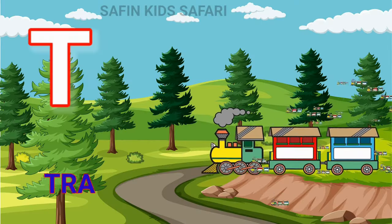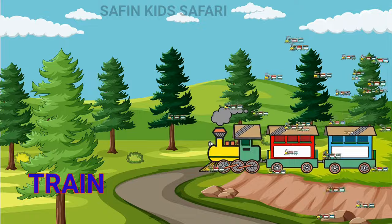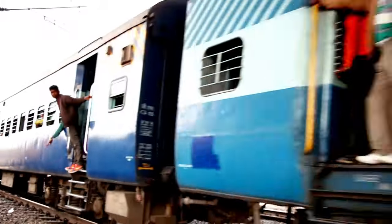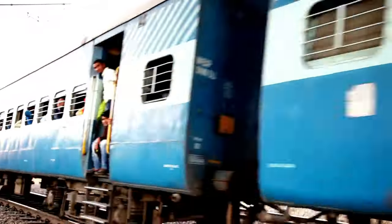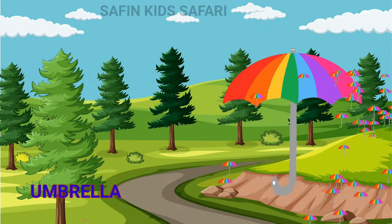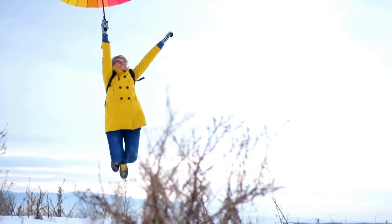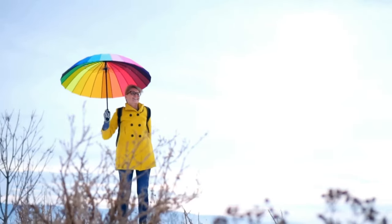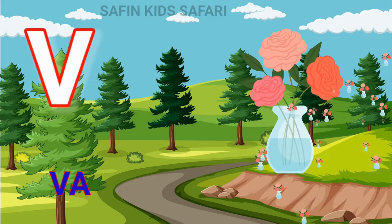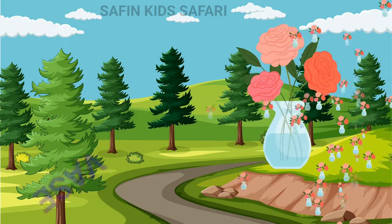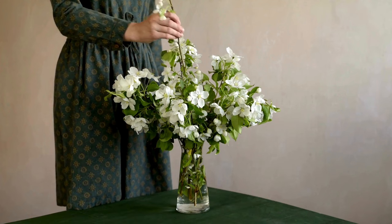T for Train. Nice Train. U for Umbrella. Nice Umbrella. V for Bhees. Nice Bhees.